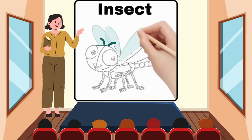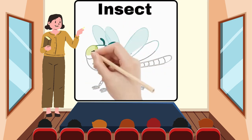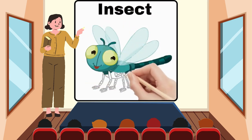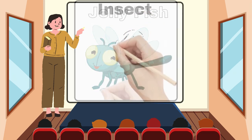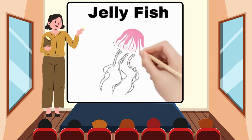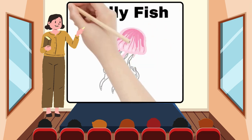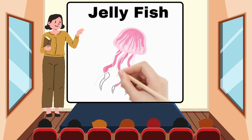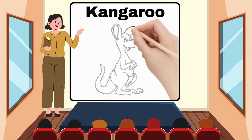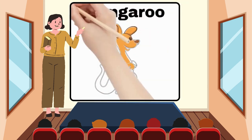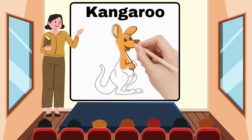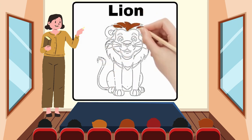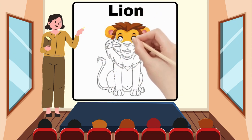I for Insect. J for Jellyfish. K for Kangaroo. L for Lion.